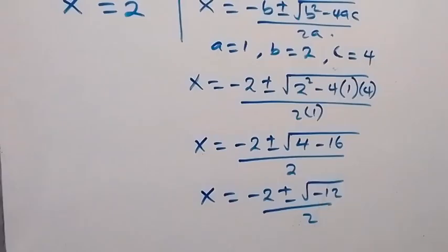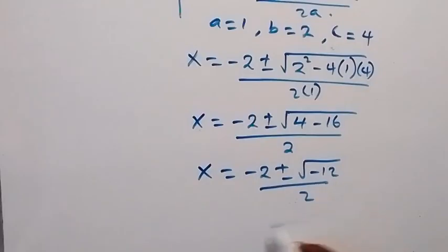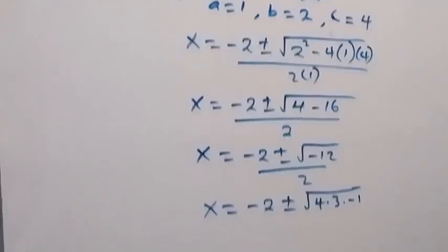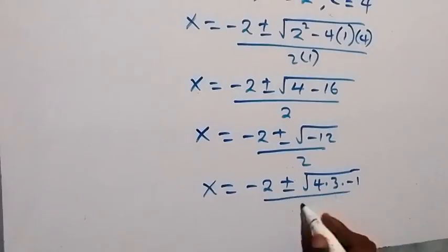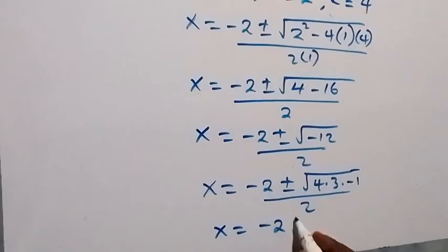And the root minus 12 here is the same thing as root 4 times 3 times minus 1. So we have x equals to minus 2 plus or minus square root of 4 times 3 times minus 1 over 2. Then root 4, we can separate that out as 2. Then root minus 1, that's i. So this is x equals to minus 2 plus or minus 2 root 3i over 2.